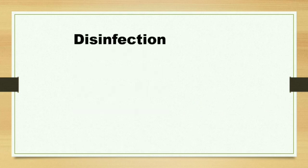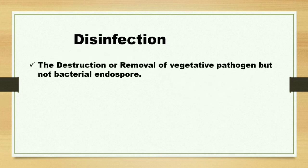Next is disinfection. Disinfection reduces vegetative pathogens but not bacterial endospores. Some common examples of bacteria that produce endospores include Bacillus and Clostridium.